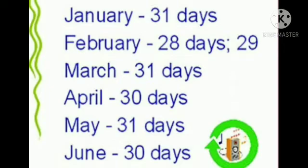January has thirty-one days. February has twenty-eight or twenty-nine days. March has thirty-one days. April has thirty days. May has thirty-one days.